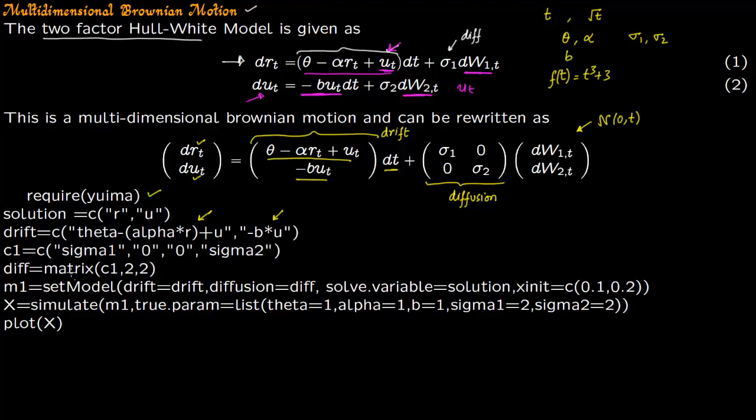Then we have this 2 by 2 matrix. So first you produce a list: sigma_1, 0, 0, sigma_2. So diffusion is your matrix. This 2 by 2 matrix is right here.